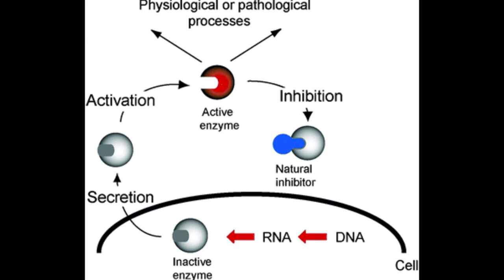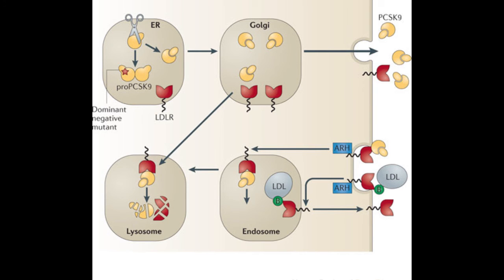Another way that enzymes can exist in inactive forms and later be converted to active forms is by activating only when a cofactor, called a coenzyme, is bound. In this system, the inactive form, the apoenzyme, becomes the active form, the holoenzyme, when the coenzyme binds.